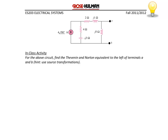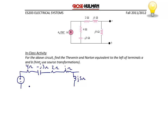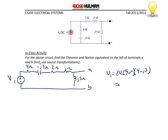Now we will do an example solving for the Thevenin and Norton equivalents using source transformations. We have a current source in parallel with (4 − j3) Ω, in series with (2 + j) Ω, and that whole quantity in parallel with j5 Ω. The first source transformation converts the current source to a voltage source V1 in series with the 4 Ω resistor and −j3 Ω capacitor. V1 = 4∠90° × (4 − j3) = 20∠53° V.